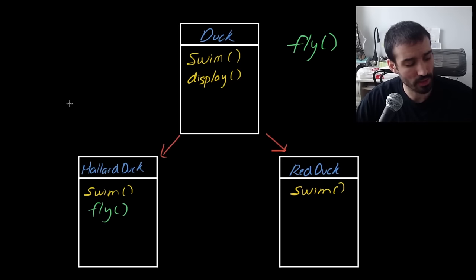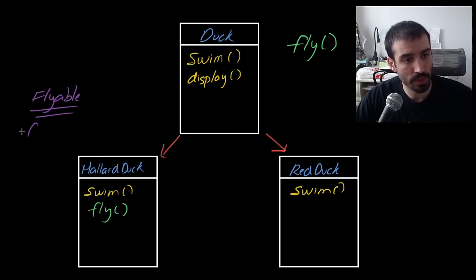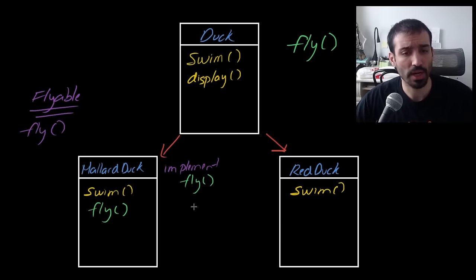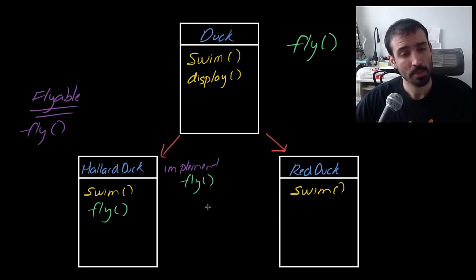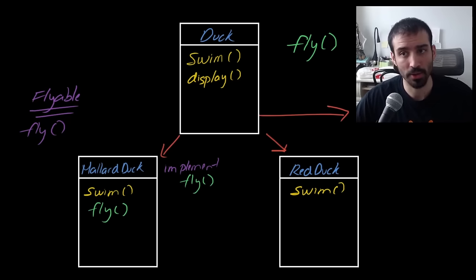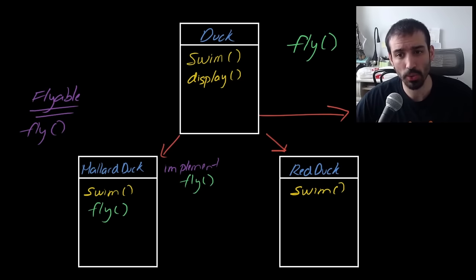One option is to use interfaces — maybe a flyable interface with a fly function — and then the mallard duck would implement that fly function. This is a pretty natural reaction, the way most people would probably do this. But the problem with this implementation is: what if we have a different subclass, like a gray duck, that also needs to fly and we want the fly function to do the same thing as in the mallard duck? The gray duck would also need to implement fly, which is not very reusable.